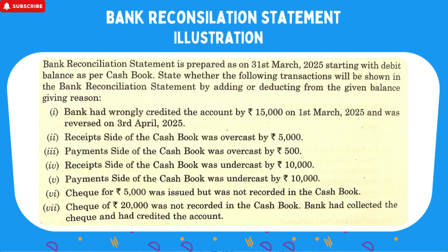State whether the following transactions will be shown in BRS by adding or subtracting. You have to tell which of your equations will be plus and which will be minus. Number 1: Bank wrongly credited account by 15,000 on 1st March and was reversed on 3rd April. Number 2: Receipt side of cash book overcast by 5,000. Number 3: Payment side of cash book overcast by 500. Receipt side of cash book undercast by 10,000. Cheque of 5,000 was issued but not recorded in cash book. Cheque of 20,000 was not recorded in cash book — bank collected the cheque and credited the account.